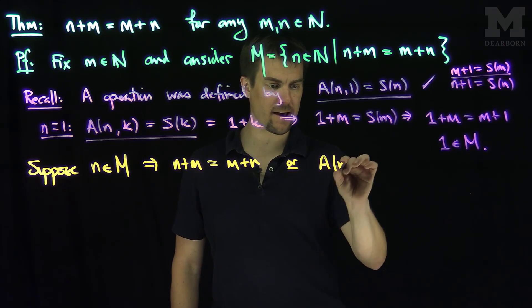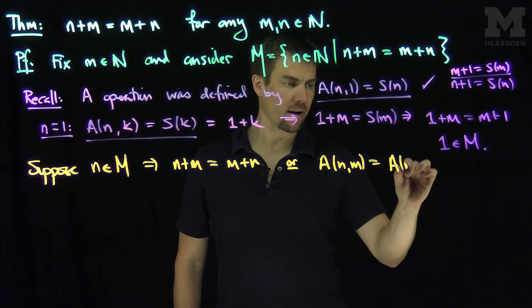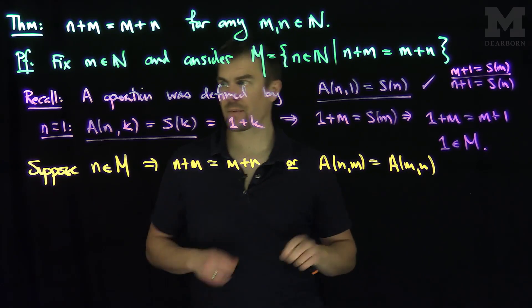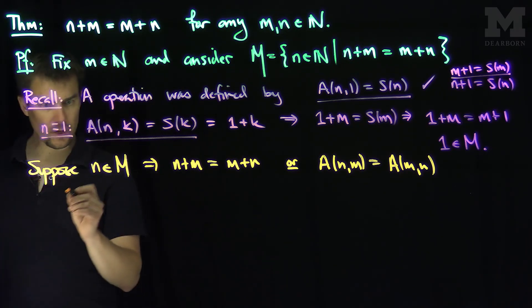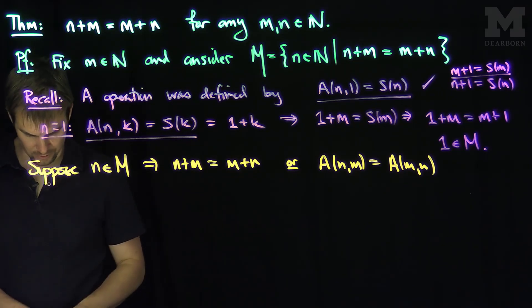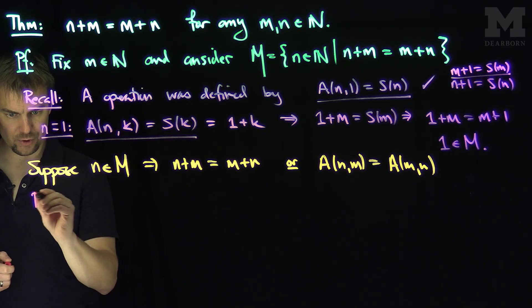Or equivalently, using our notation, that A of n and m is equal to A of m and n. Now, how is our operation defined for the successor? So recall, from our construction, by construction.